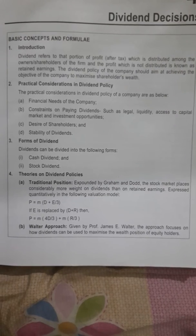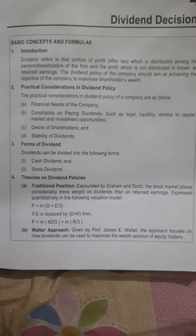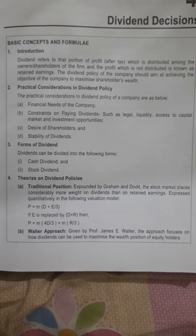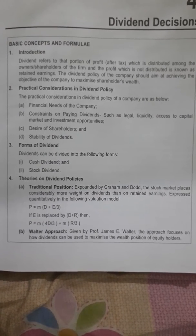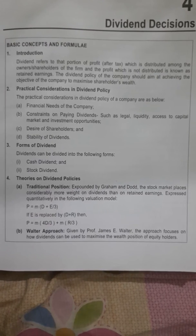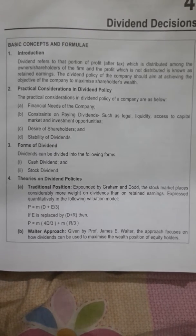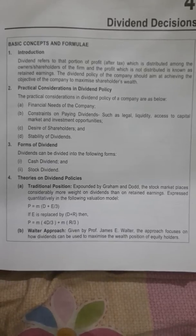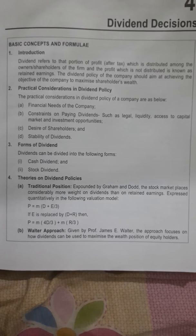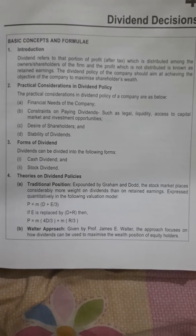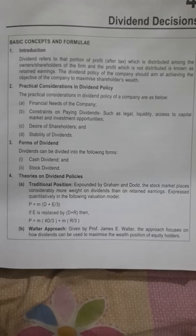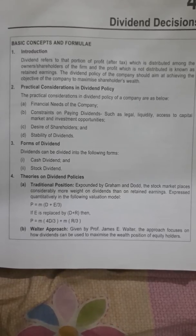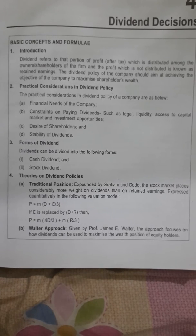Basic Concepts and Formula: Introduction about Dividend Decision. Dividend refers to that portion of profit after tax which is distributed among the owners and shareholders of the firm. The profit which is not distributed is known as retained earnings. The Dividend Policy of the company should aim at achieving the objectives of the company to maximize shareholders' wealth.